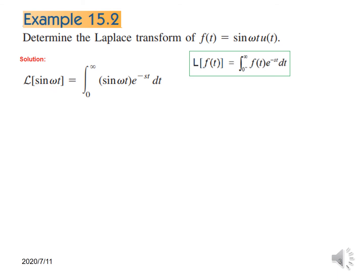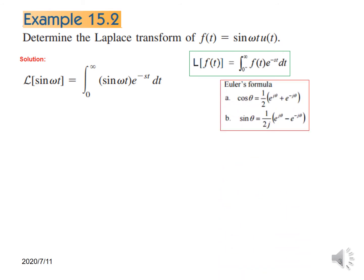So the Laplace of sine omega t is the integral of the function multiplied by e^(−st) dt. We will use Euler's formula to convert this into exponential form. Using Euler's formula, sine omega t can be written as e^(jωt) minus e^(−jωt) divided by 2j. So this is the function divided by 2j, multiplied by e^(−st) dt.